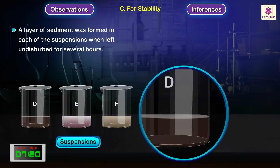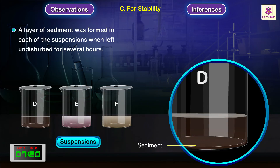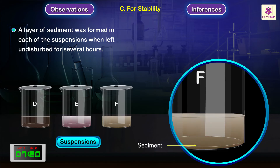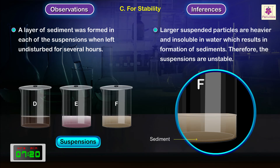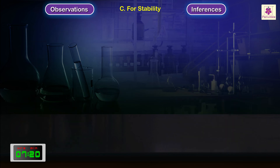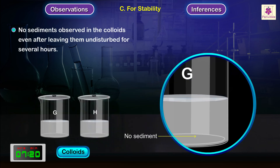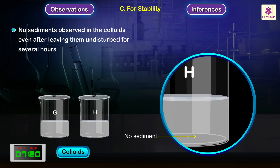A layer of sediment was formed in suspensions of D, E and F when left undisturbed for several hours. Larger suspended particles are heavier and insoluble in water, which results in formation of sediments. Therefore, the suspensions are unstable. No sediments observed in the colloids of G and H, even after these were left undisturbed for several hours.